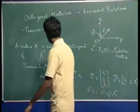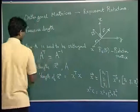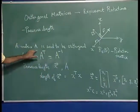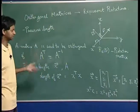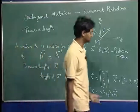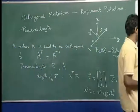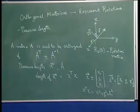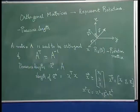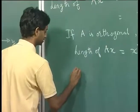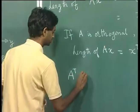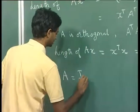So we showed that if matrix A is orthogonal, it will preserve the length of the vector, and vice versa — if it preserves the length of the vector, the matrix A is called an orthogonal matrix. We notice that A transpose A equals the identity.